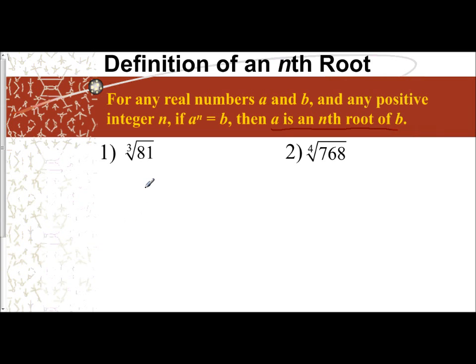So let's just do our prime factorization with 81, the cube root of 81, to help us out. So 81 breaks into 9 and 9. 9 breaks into 3 and 3 and 3 and 3 for the other 9.